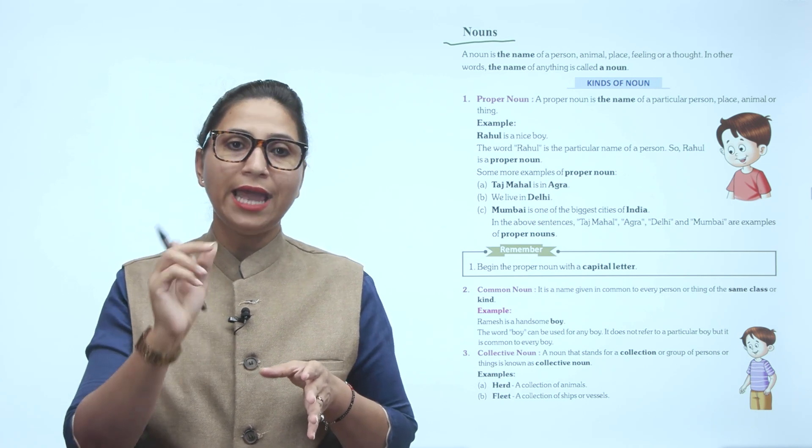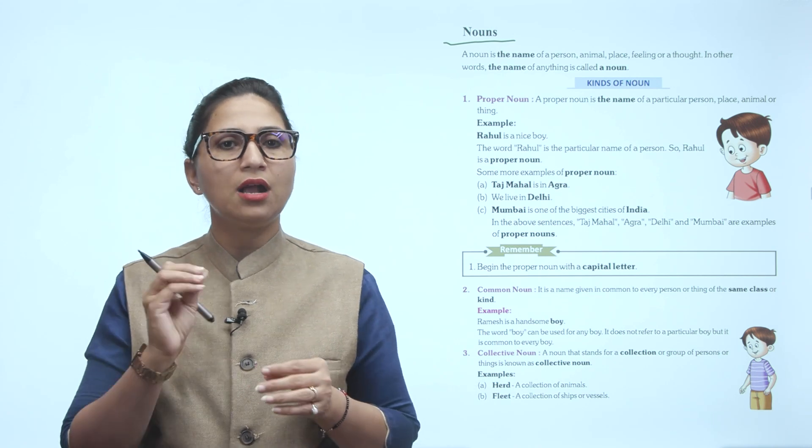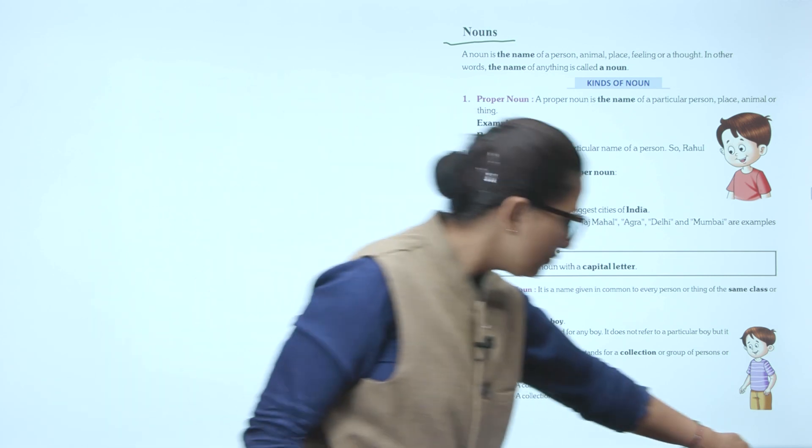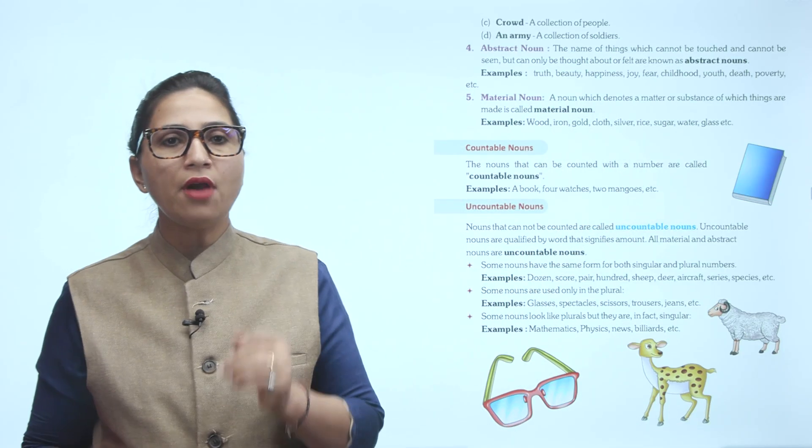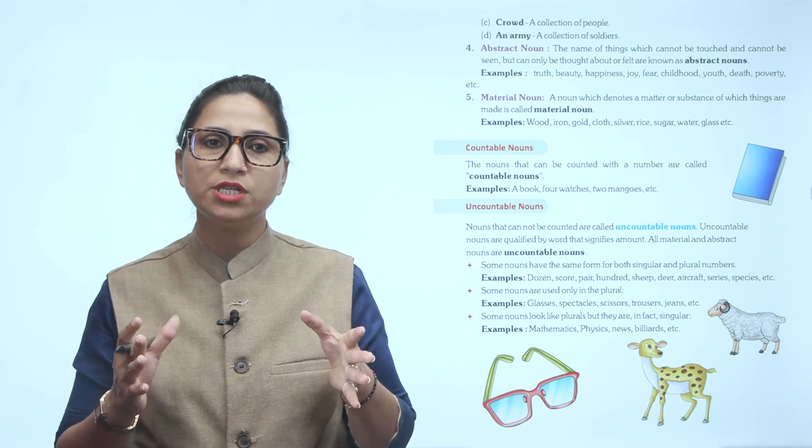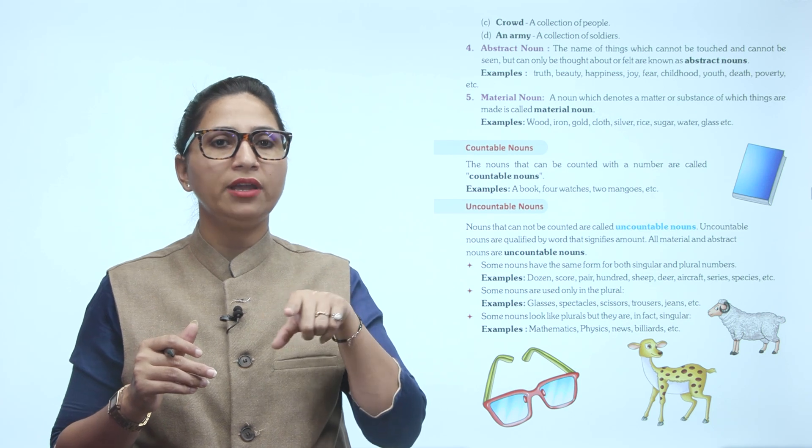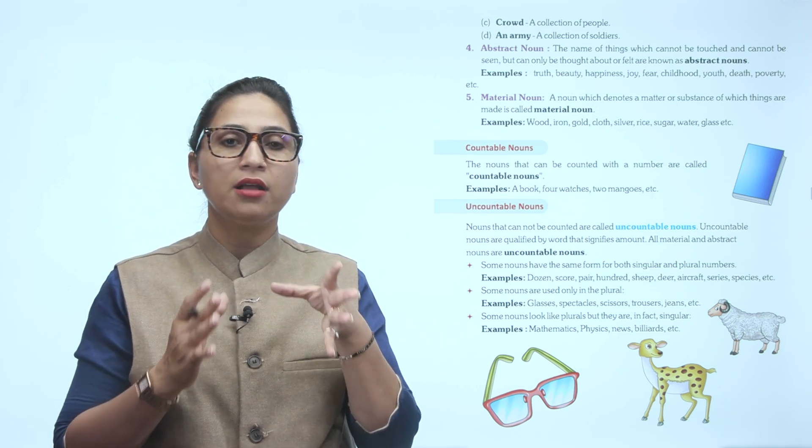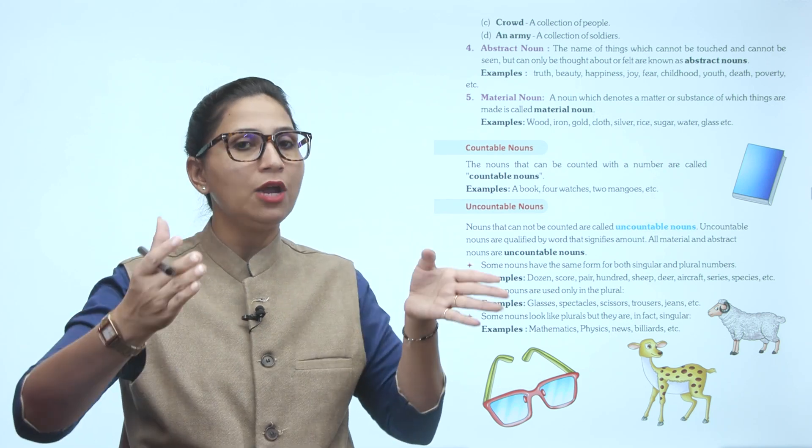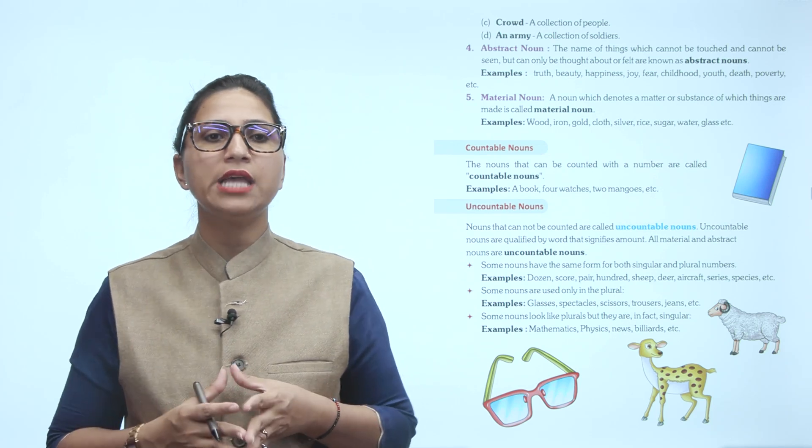Examples: A herd is a collection of animals. A fleet is a collection of ships or vessels. A crowd is a collection of people. An army is a collection of soldiers. When soldiers come together in a group, we call it an army.